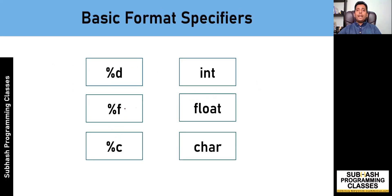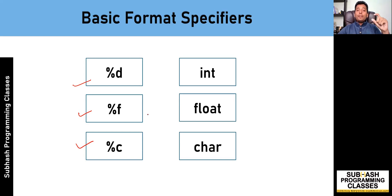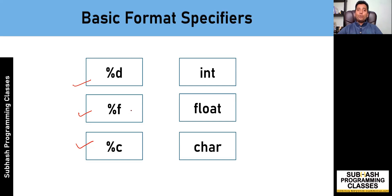In this slide, I've given you a few basic format specifiers: %d, %f, and %c. A format specifier indicates to printf how the data has to be formatted before printing it on the screen as output. There are several other format specifiers as well, which I'll use in other lessons when required. For brevity, let us only discuss these basic format specifiers.